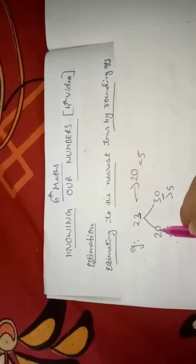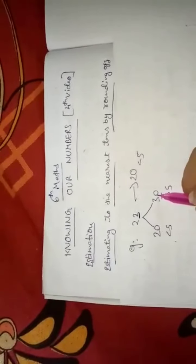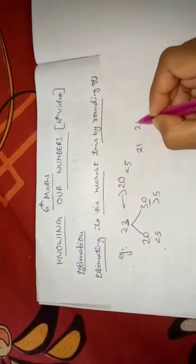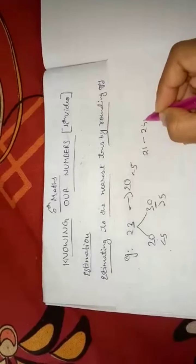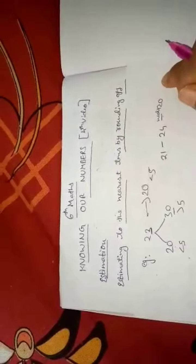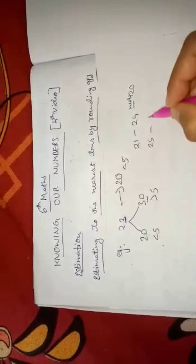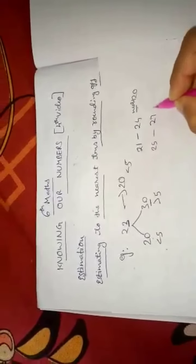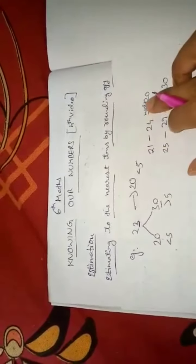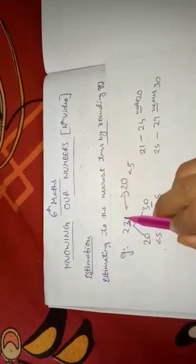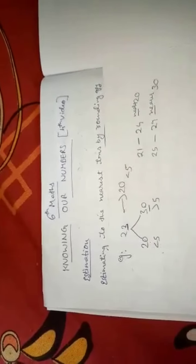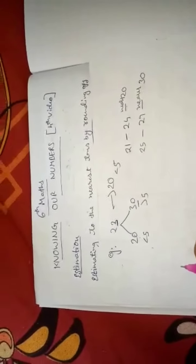You can see that 22 is nearer to 20 but far from 30. So from 21 to 24, it is nearer to 20. And 25 to 29 — it is nearer to 30. You have to see which is nearer and round off accordingly. Next, one more example: 732.